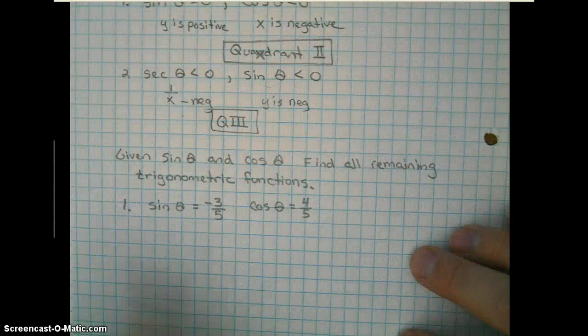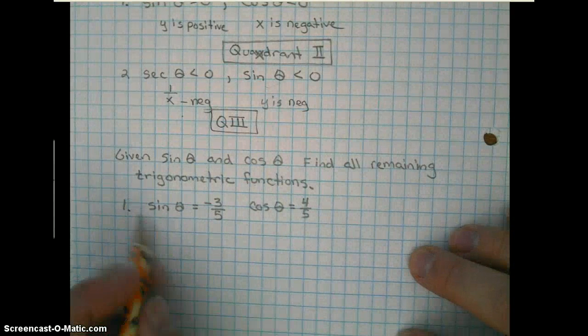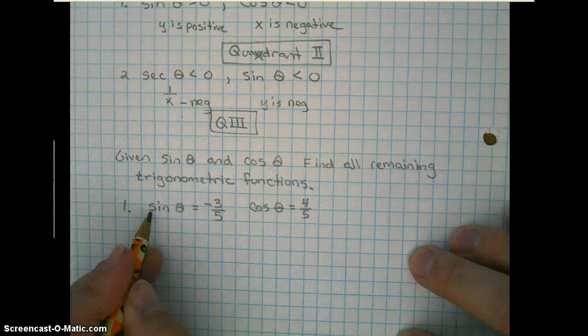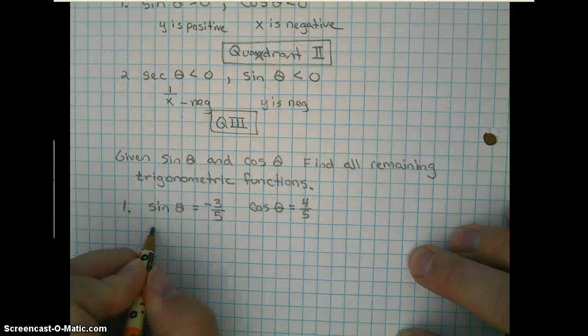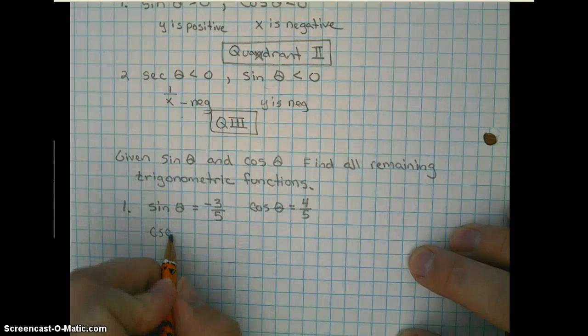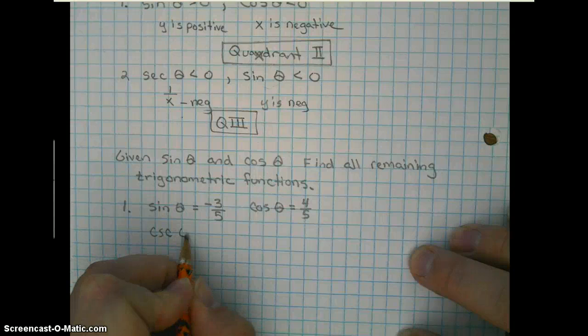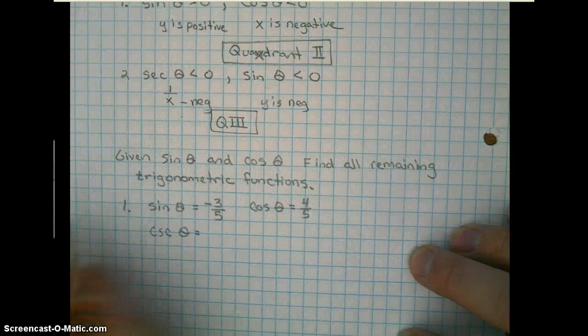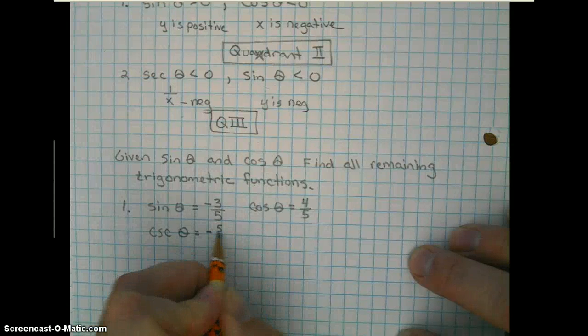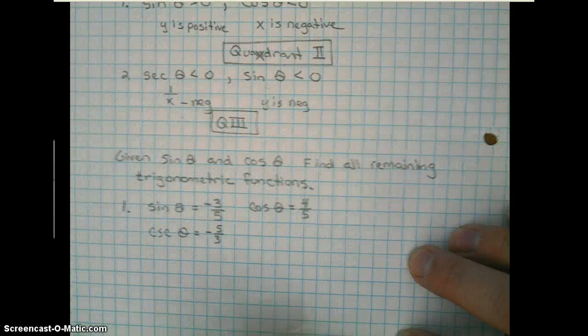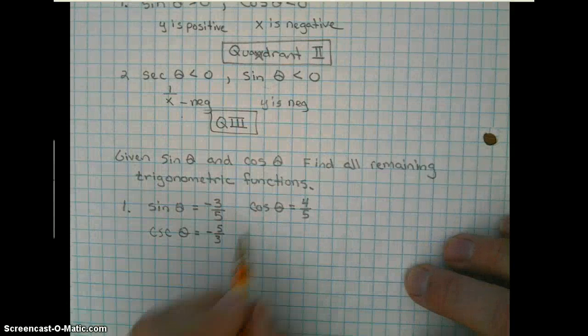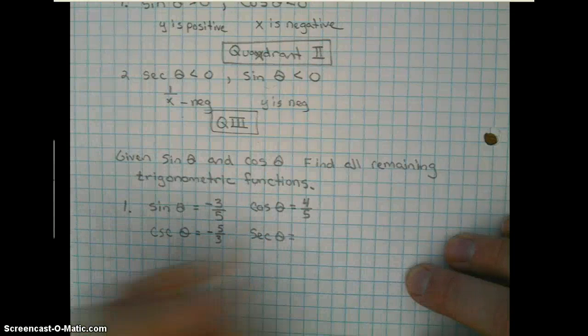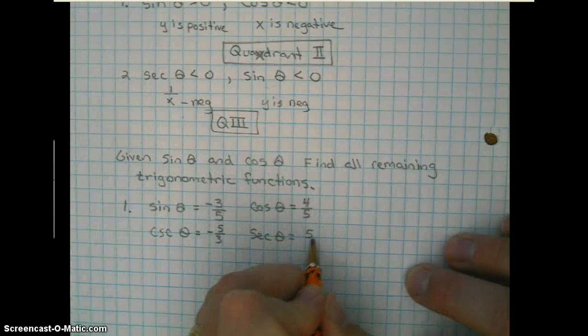Well, to get the other trig functions, I'm just going to go ahead and apply the reciprocal definition. The reciprocal of sine is cosecant. And basically cosecant is the reciprocal of sine, so we have negative 5 thirds. The reciprocal of cosine is secant, and the reciprocal of 4 fifths is 5 fourths.